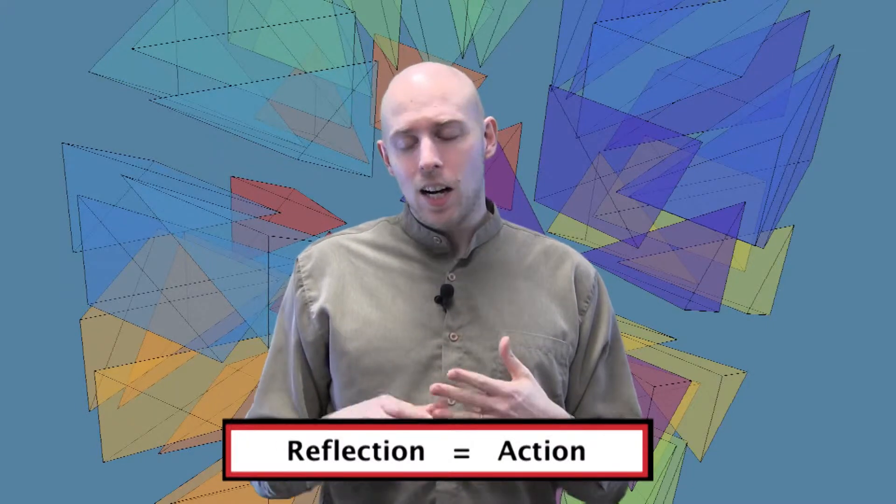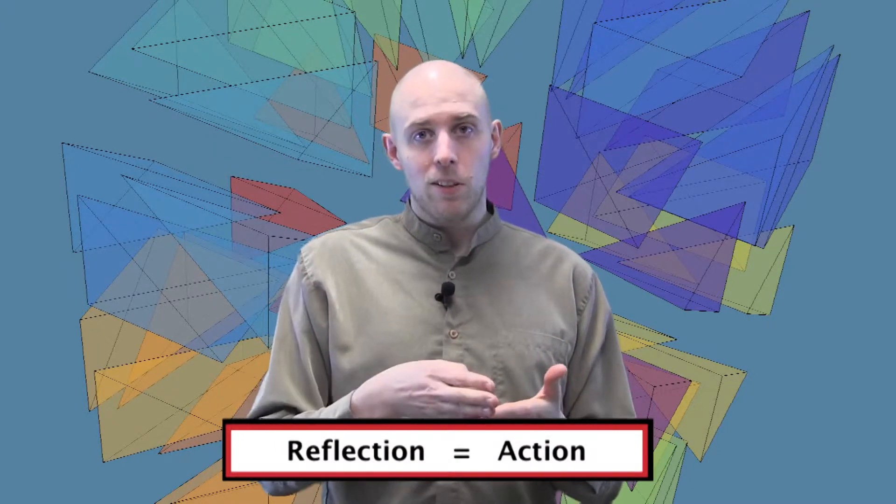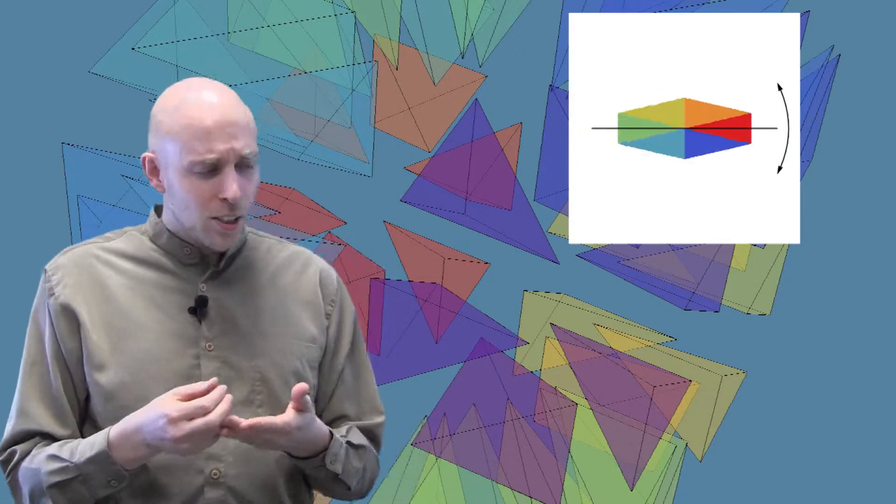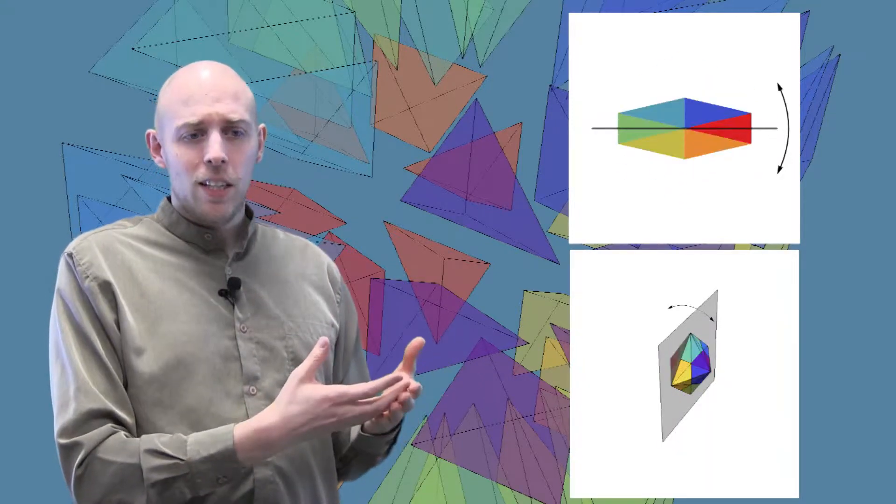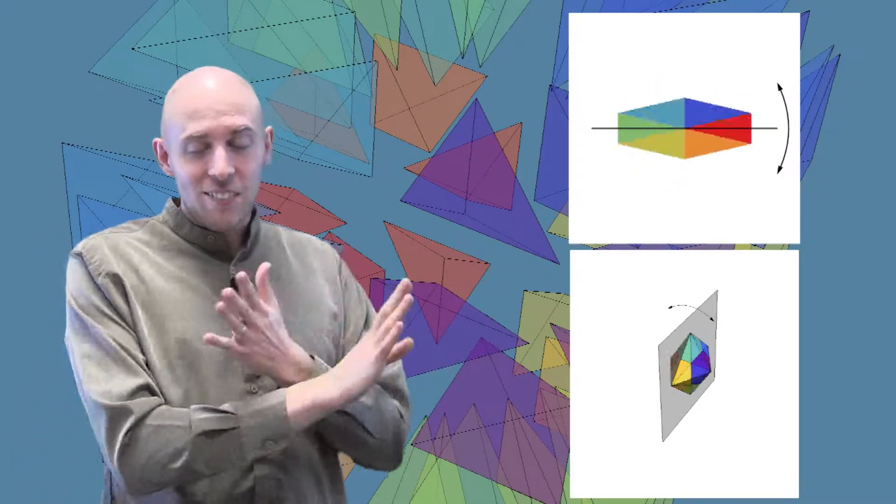Today we're going to talk about reflection groups. We're going to think of a reflection as an action of reflecting in a mirror. So for our two-dimensional friends, that is basically the same thing as a flip. But in three dimensions and higher, you need to really think about that as turning everything inside out.